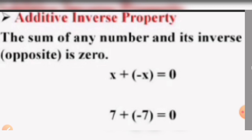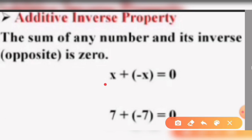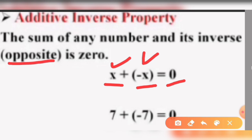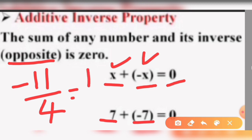Next topic: the Additive Inverse Property. The sum of any number and its inverse is 0. The inverse means its negative number. What is the negative of x? It is minus x. When you add a positive value and its negative value, you get 0. So the additive inverse of x is minus x — simply its opposite. For example, the additive inverse of minus 11 by 4 is 11 by 4.